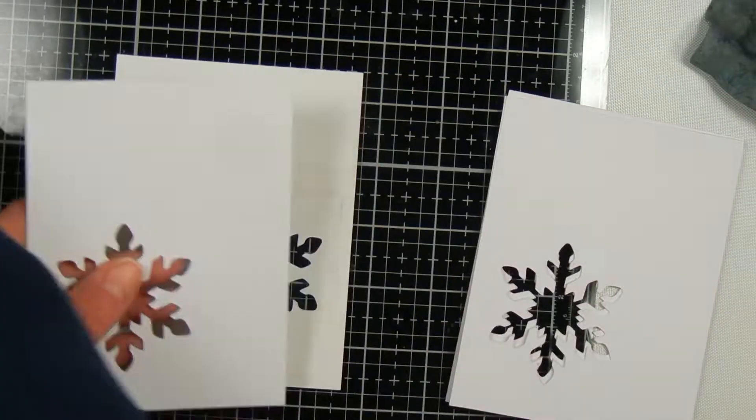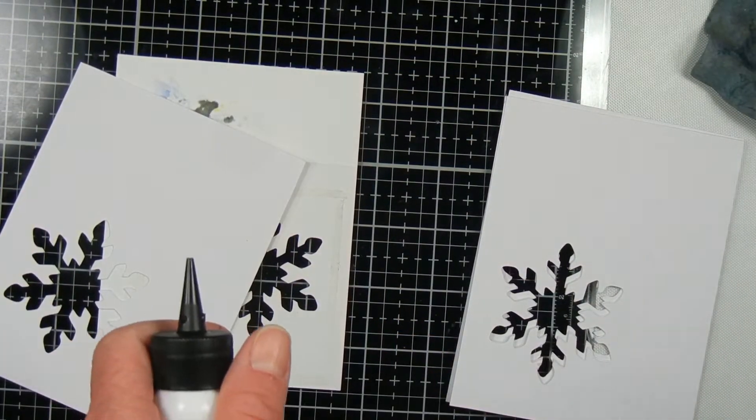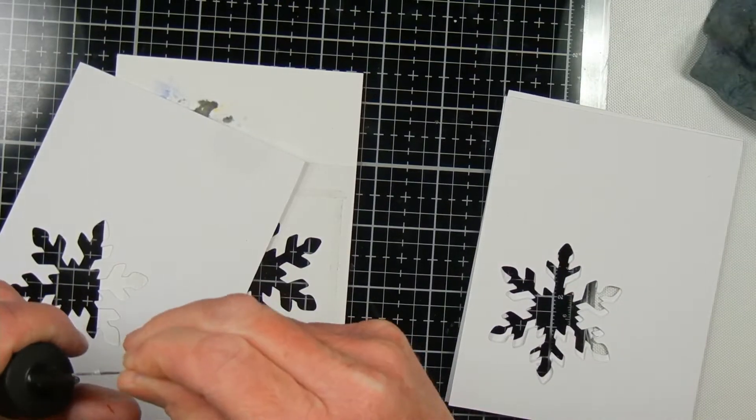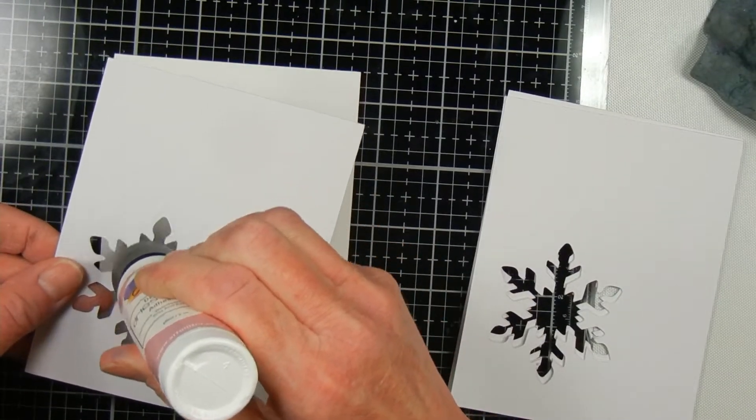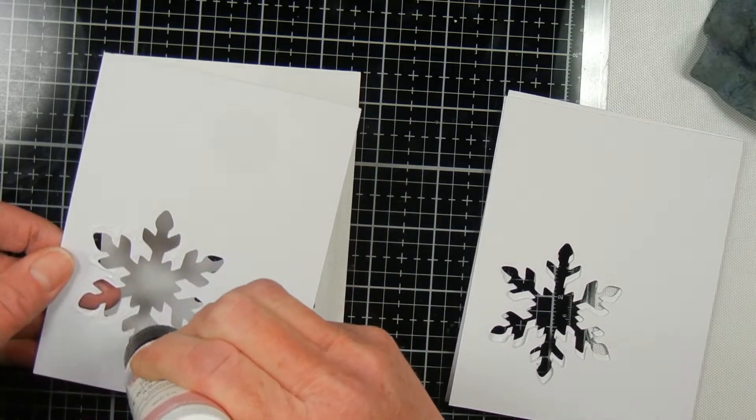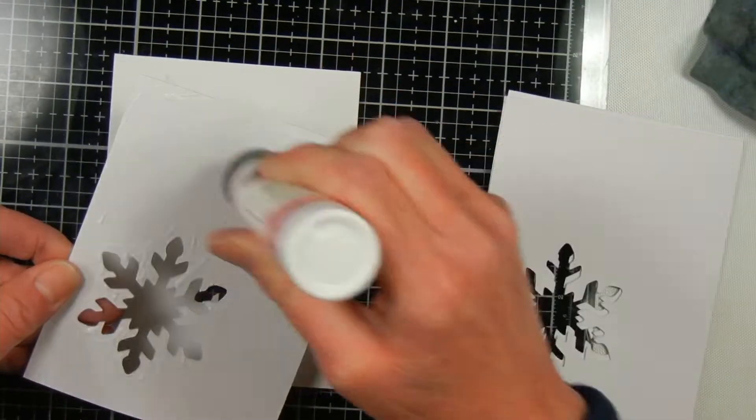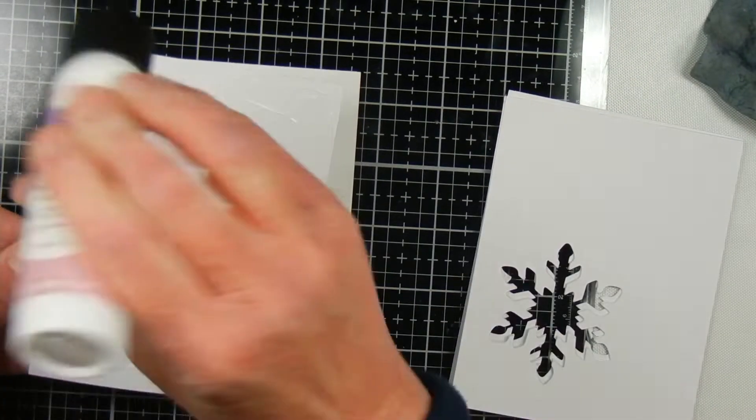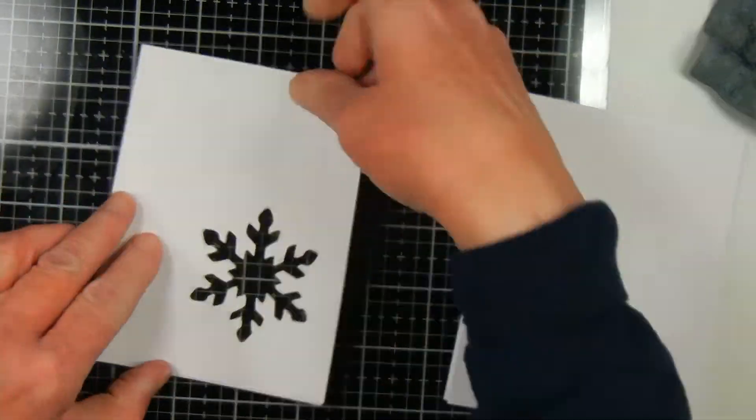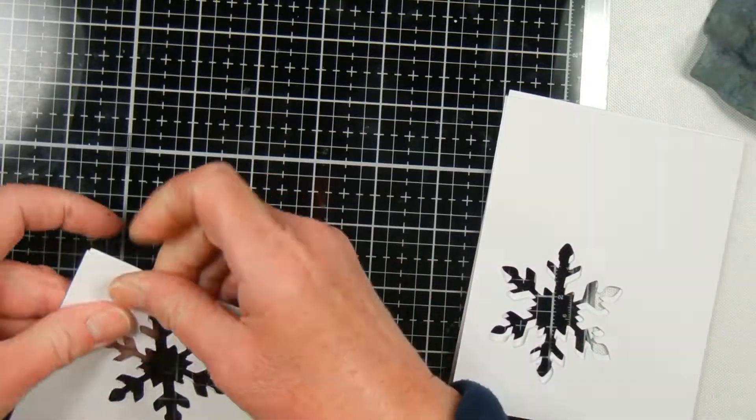Instead of using foam tape for my shaker, I'm going to add some extra paper behind my card panel to make a well. I'm gluing it together with some art glitter glue. The card panel I have is just a little bit smaller than an A2 size card.